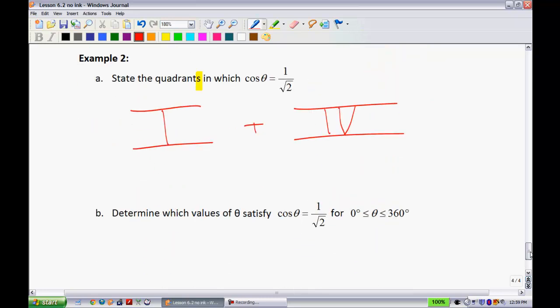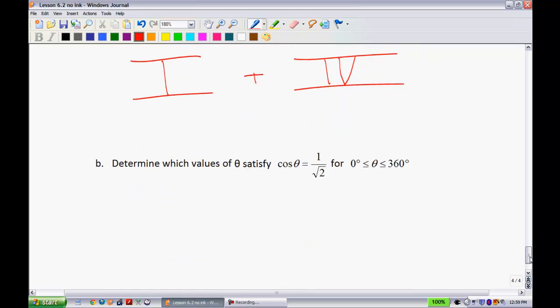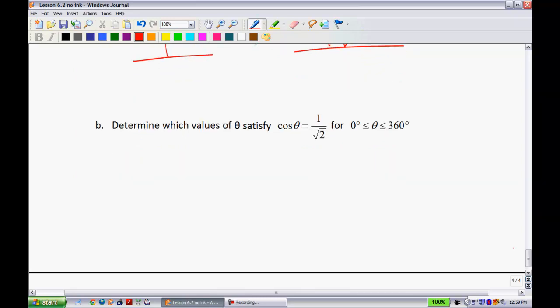Now, the same or a very similar question. Determine which values of theta satisfy cosine theta is equal to 1 over root 2. Well, using my CAST rule, for instance, since I see that this ratio right here is positive, I know that I'm going to have a triangle that's in this quadrant and a triangle that's in this quadrant, because that's where cosine is positive. And because I know that the ratio is 1 over root 2, that means in terms of cosine, the adjacent would be 1. Hypotenuse is root 2. So, I can write it like so.